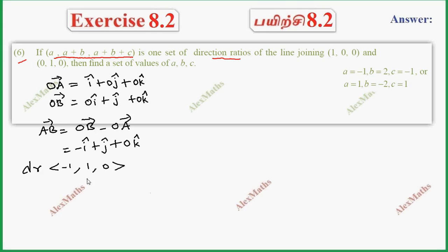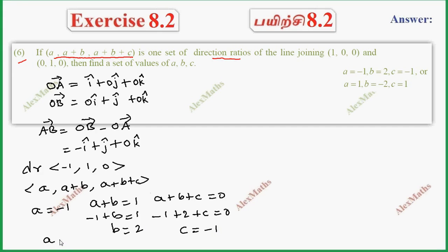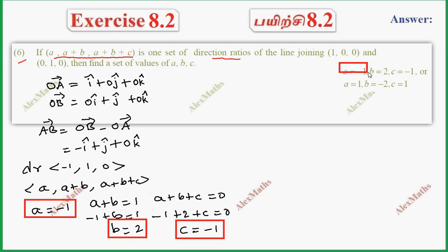So the direction ratios from the coefficients are minus 1, 1, 0. This is one set of direction ratios of the line joining. We compare and equate: first value a equals minus 1, second value a plus b equals 1. This is one set of answers.